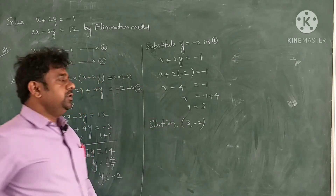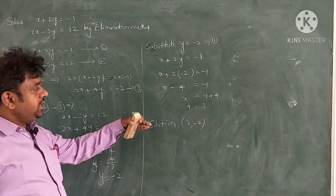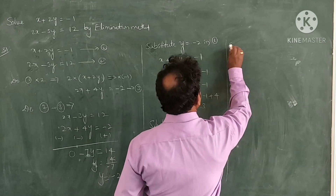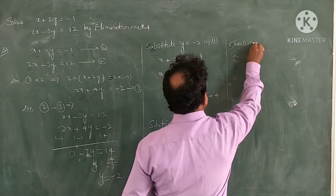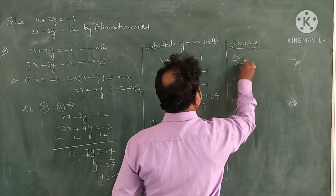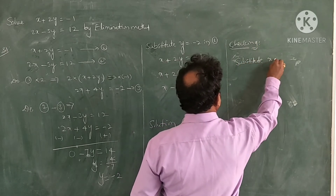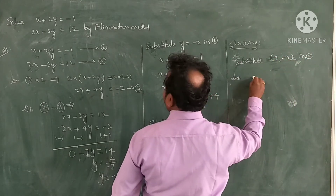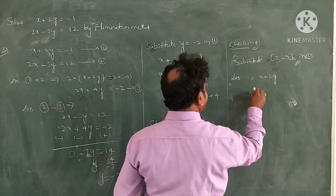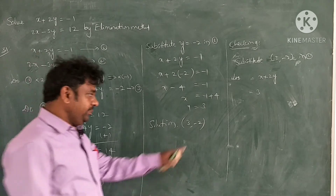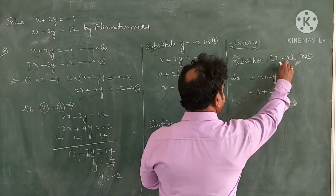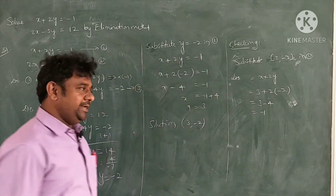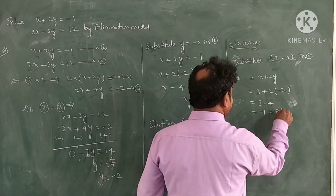Now, check whether our solution is correct. Substitute (3, minus 2) in equation 1. LHS: x plus 2y equals 3 plus 2 into minus 2 equals 3 minus 4 equals minus 1. This equals RHS, which is minus 1. So equation 1 is verified.